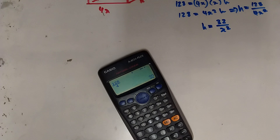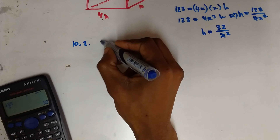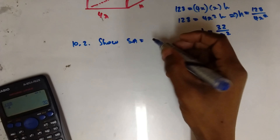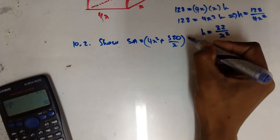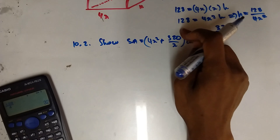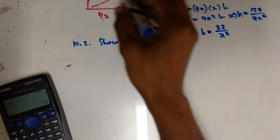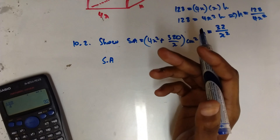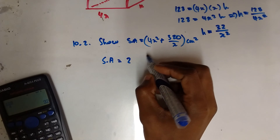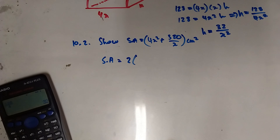10.2: Show that the total surface area of the box is given by 4x² + 320/x cm². Since the box is open at the top, we need to account for that. The total surface area of a closed rectangular box would be 2(lw) + 2(lh) + 2(wh), but because the top is open we remove one face.